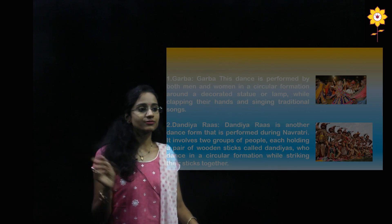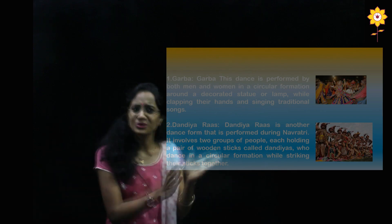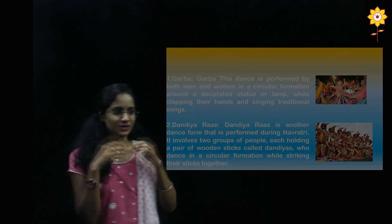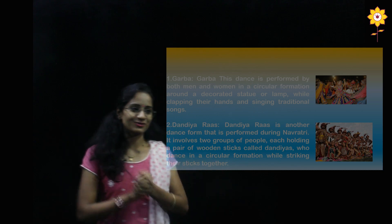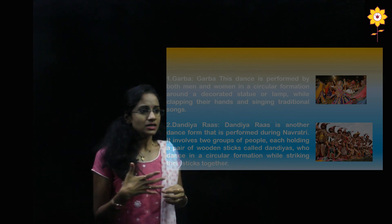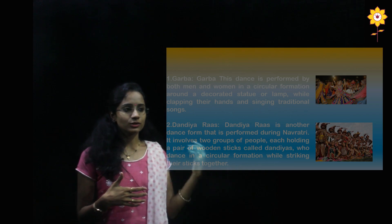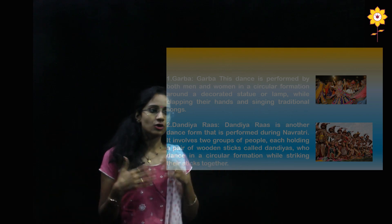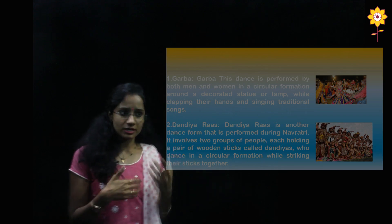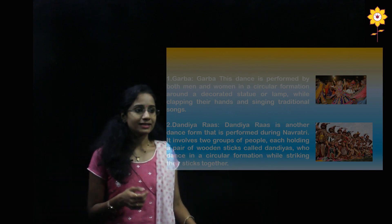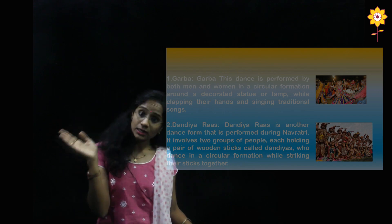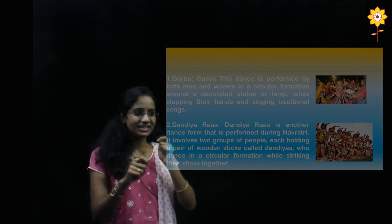Garba is performed by both men and women in a circular formation. Not much description is required as most people have witnessed and been a part of this dance. The dancers move in a circular formation around a decorated statue or a lamp while clapping their hands and singing traditional songs.